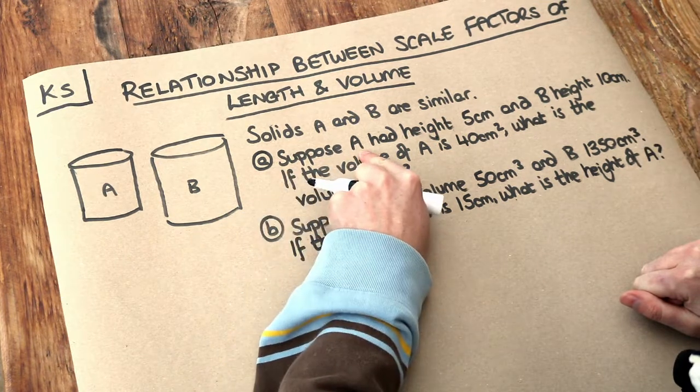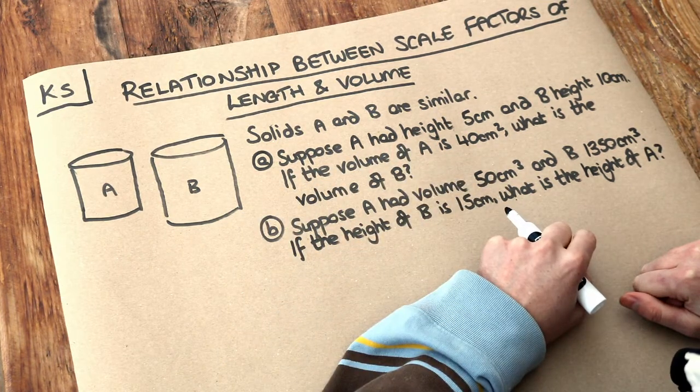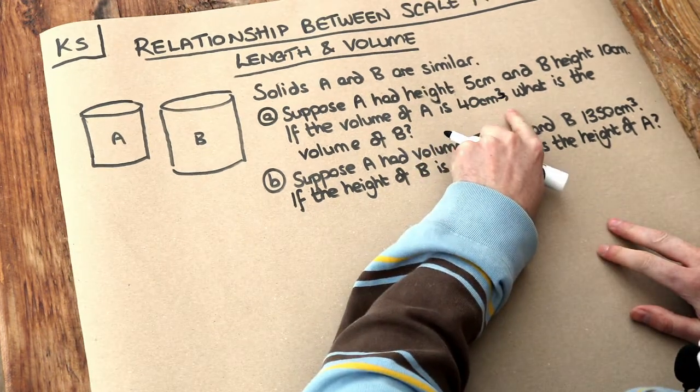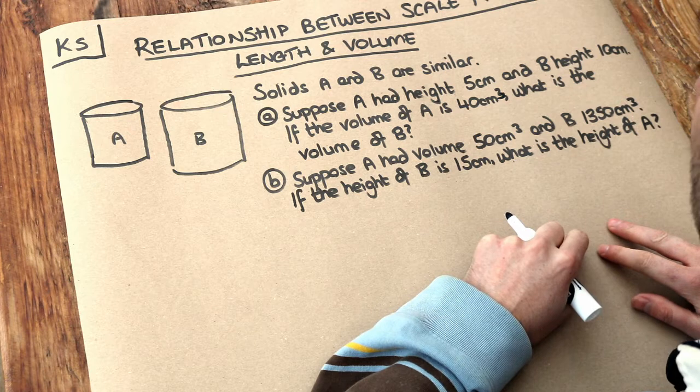Now in A, suppose solid A had height 5cm and B had height 10cm. If the volume of A is 40cm cubed, what is the volume of B?